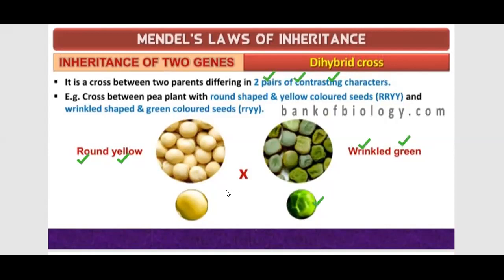The wrinkled green and the yellow round. The yellow round is dominant. This is garden peas — Pisum sativum. It is a cross between two parents differing in two pairs of contrasting characters. The two characters taken are color as well as the shape of the seed.